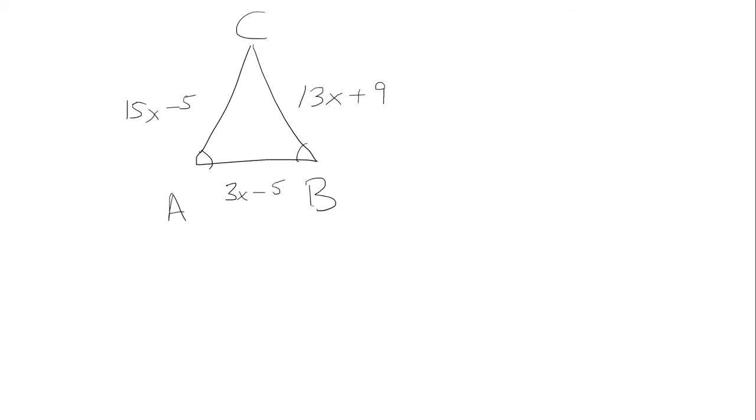My goal here is to find the perimeter. The first thing we're going to do is notice that AC and BC are congruent because that's the definition of an isosceles triangle, so we're going to set length AC and BC equal to each other.